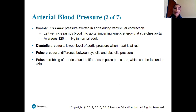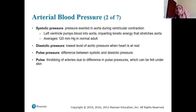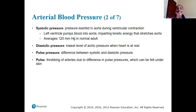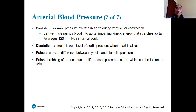Systolic pressure is the pressure exerted in the aorta during ventricular contraction. When the ventricles contract, the left ventricle pumps blood through the aorta, imparting kinetic energy that stretches this structure. For an average adult, the systolic blood pressure should be around 120 — that's what we call normal.